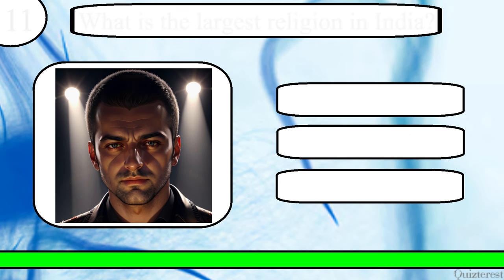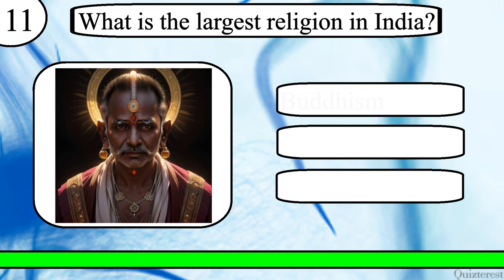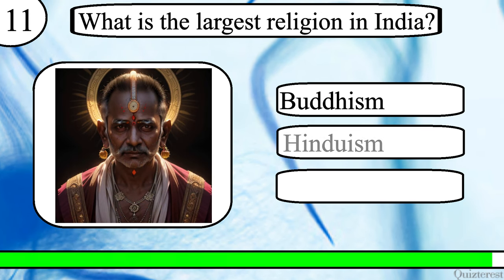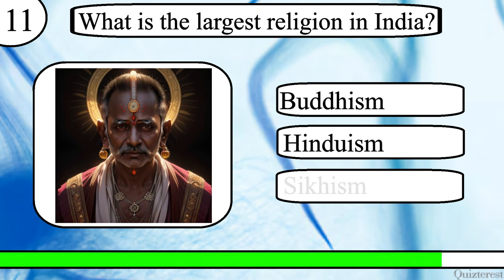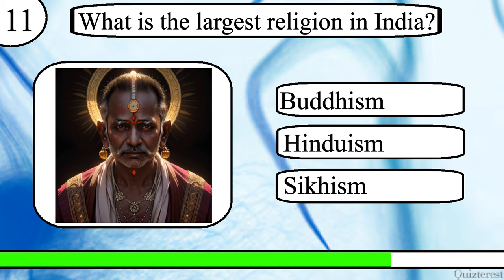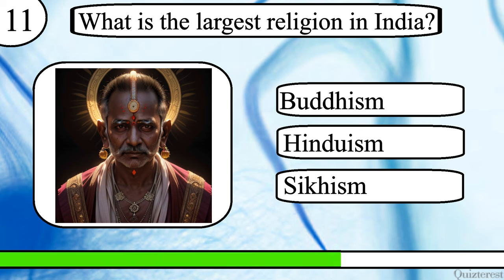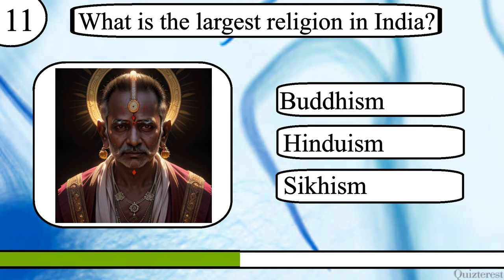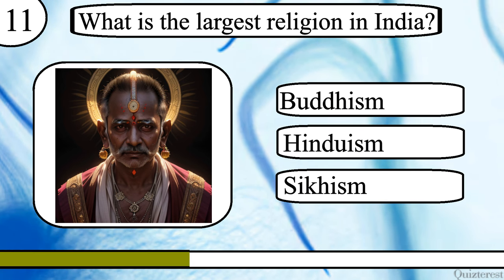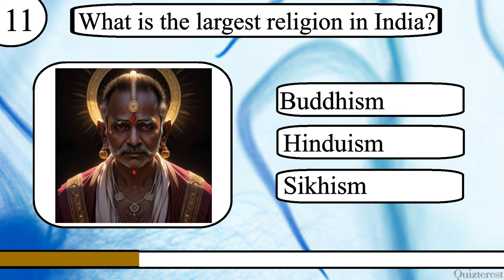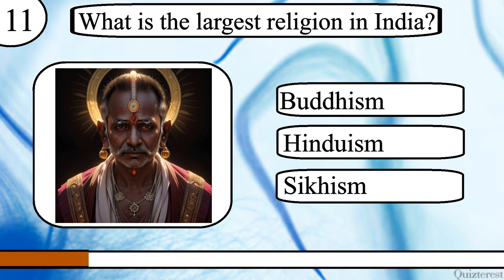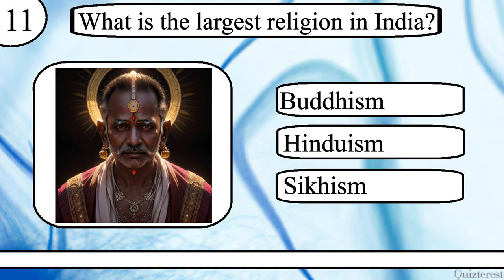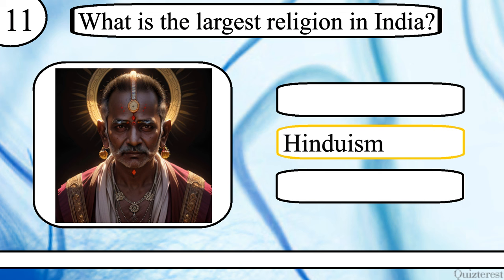Question 11. What is the largest religion in India? Buddhism, Hinduism, or Sikhism? The correct answer is Hinduism.